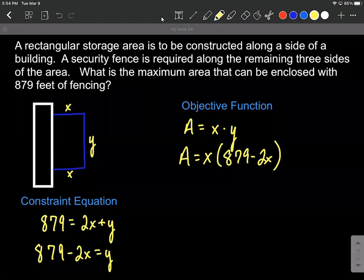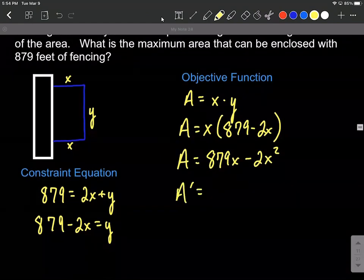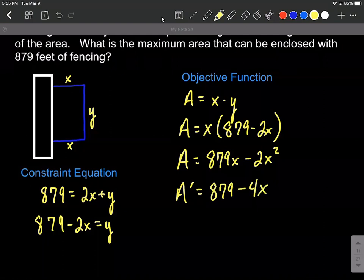Now to maximize this area, what we probably want to do is take the derivative, but instead of doing the product rule to take the derivative, I'm going to first go ahead and distribute that X. So 879 times X minus two X squared. Now I can take the derivative and find A prime is going to be 879 minus four X, just applying the power rule to take that derivative.